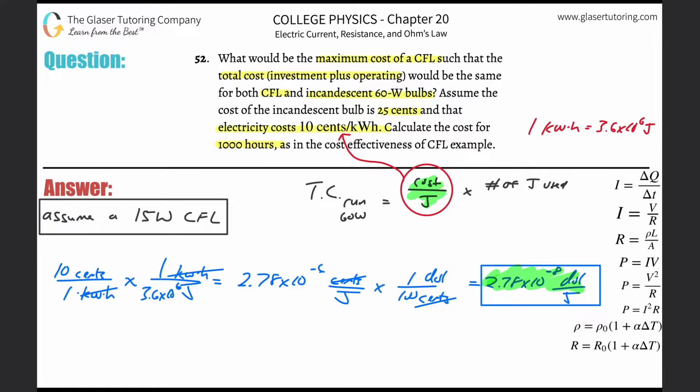In order to find this, we have to remember what it means to be a 60 watt bulb. Remember 60 Watts is the same thing as saying 60 joules per second. In other words, a 60 watt bulb will consume 60 joules of energy every single second. So if you run the bulb for one second, how much energy are you consuming? 60 joules. If you run it for two seconds, how much? 120 joules.